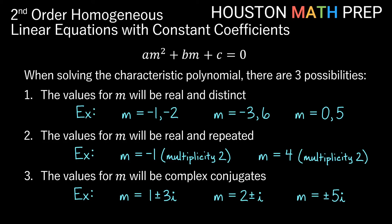Now it turns out there's just a little bit more to it than that. When we solve our characteristic polynomial, our am squared plus bm plus c equals zero, we solve that for m. There are three possibilities for us getting solutions for m. The first possibility, like the one we just did, was when the values for m are real numbers and they are not the same. They are distinct. So if we get m is negative 1 and negative 2, or negative 3 and 6, or 0 and 5, those will be very straightforward, just like the example we just did.